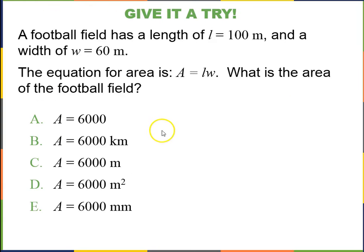So let's give it a try. You've got a football field, which has a length of 100 meters and a width of 60 meters. It's a rectangle. The equation for the area of a rectangle is length times width. So what is the area of this football field? Take a look at these answers. I'd like you to pause the video for these give it a try's, think about it, choose an answer, and then resume the video, and I will tell you the answer. So please press pause.